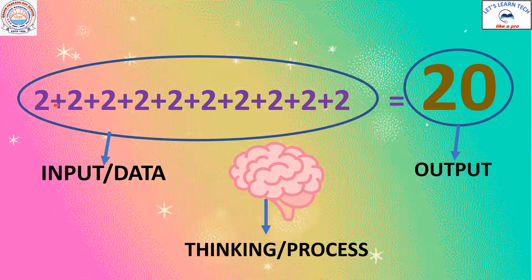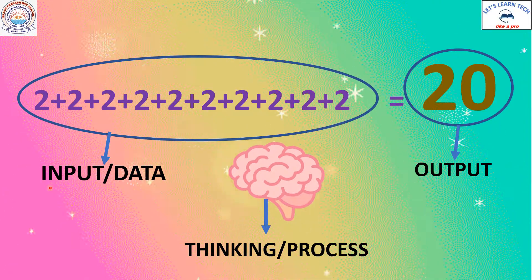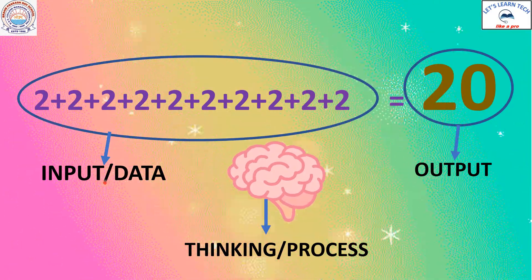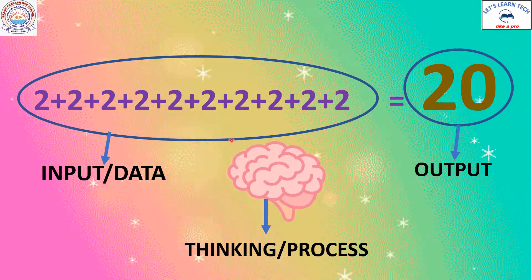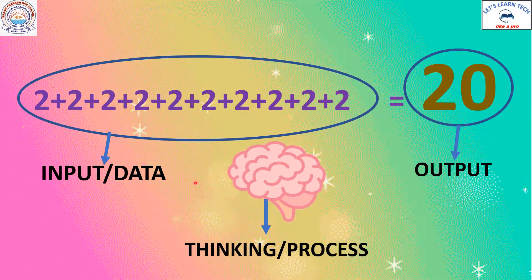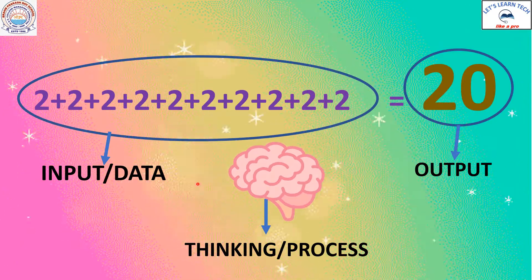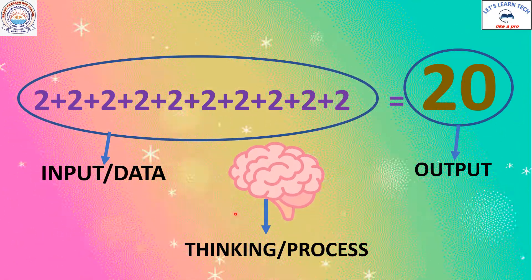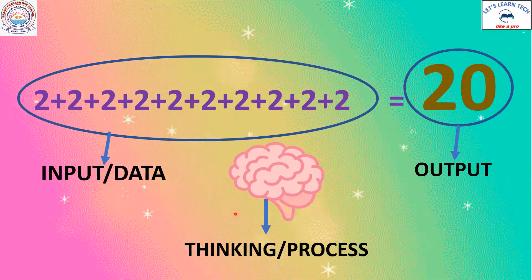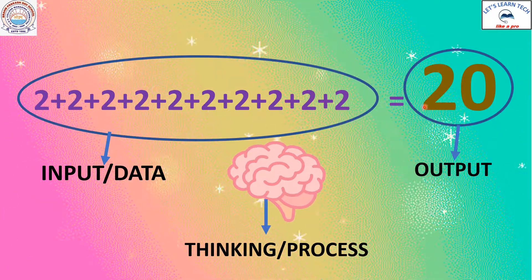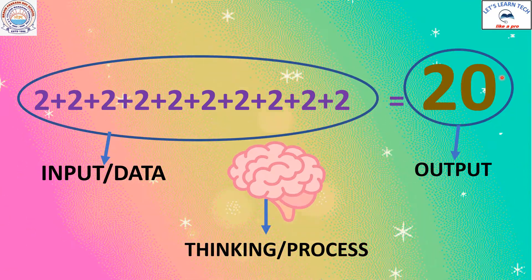2 plus 2 plus 2 plus 2 plus 2 — this is the question, and this is called input that is put into your brain when you read it. Now you are thinking about the question and finding out the answer. You are adding 2 for 10 times and you get the answer. You take the decision. And then the output is 20. 20 is the answer that we have given as an output.